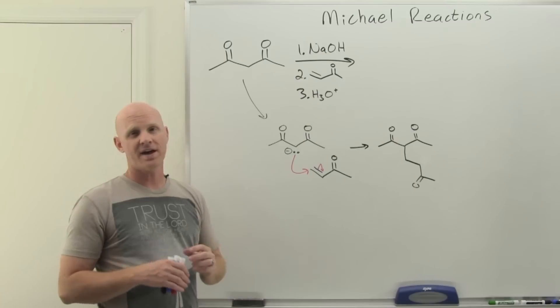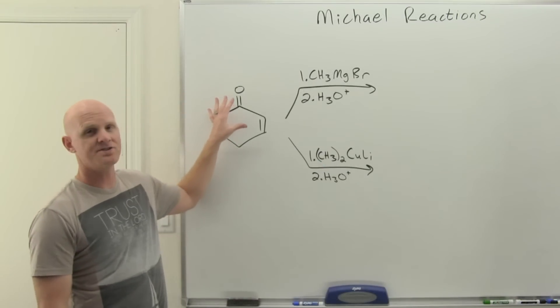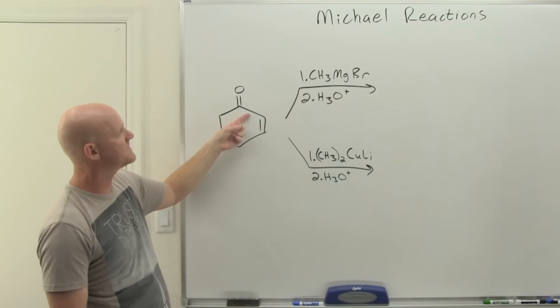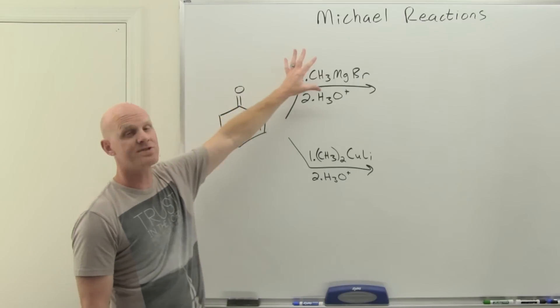I want to show you one other context where we're going to see this using some organocuprates. In this case, we're going to start off once again with a conjugated ketone. This one's cyclic—doesn't have to be cyclic—but it is a conjugated ketone, one sigma in between the two pi bonds. We're going to contrast the difference between attacking with a Grignard versus attacking with the organocuprate.